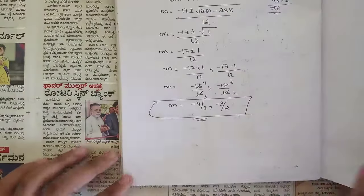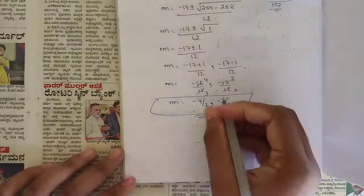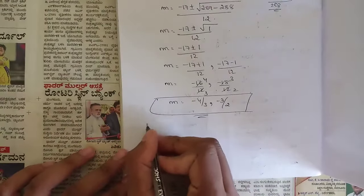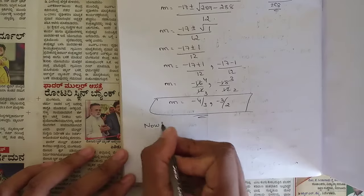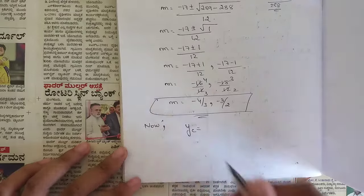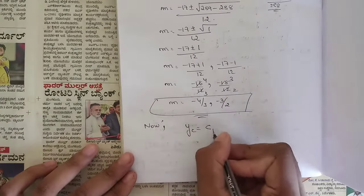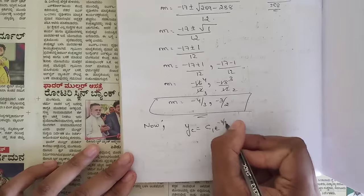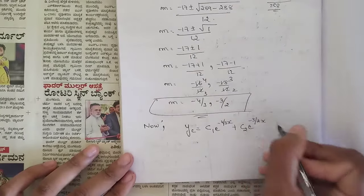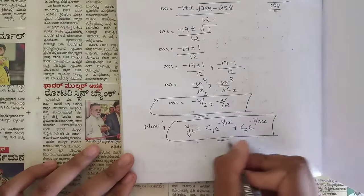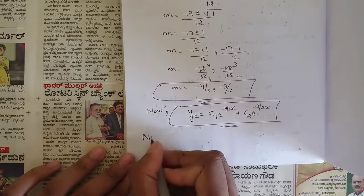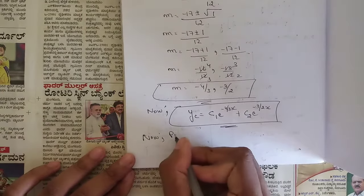We found two roots: m = -4/3 and m = -3/2. Since r(x) ≠ 0, this is the complementary function (not the final answer). The complementary function is: yc = c₁·e^(-4x/3) + c₂·e^(-3x/2). Now we need to find the particular integral.